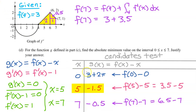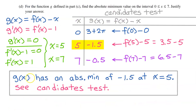We were asked to find the absolute minimum value, which is negative 1.5 at x equals 5. In summary, g of x has an absolute minimum of negative 1.5 at x equals 5. See candidates test.